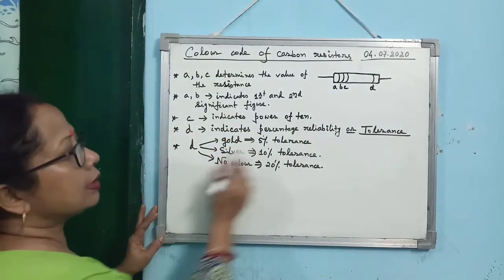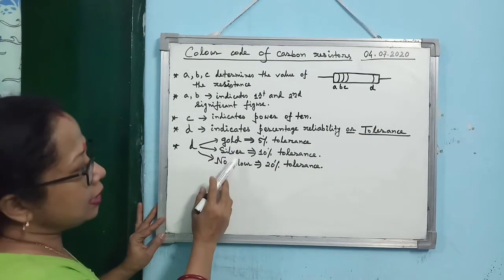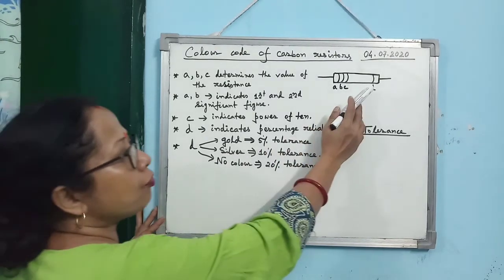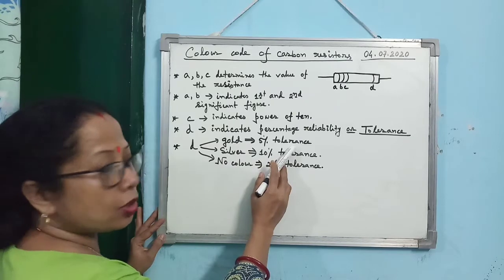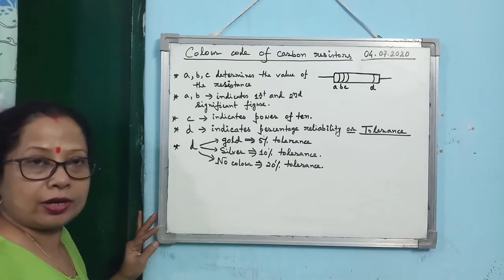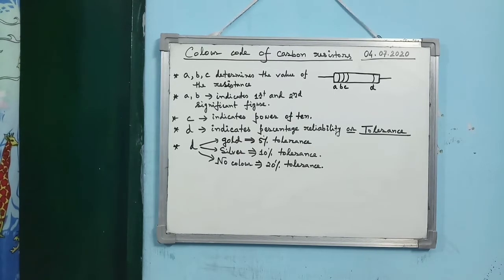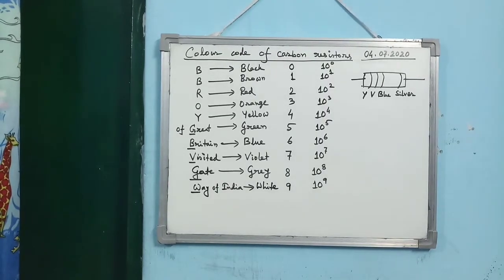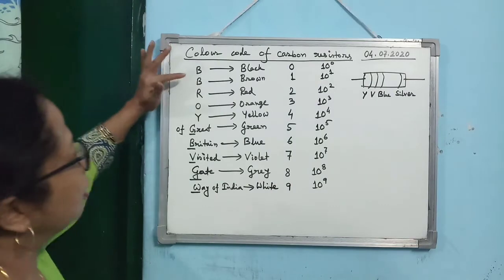The possible colors of ring D are gold, silver, or no color. Gold means 5% tolerance, silver means 10% tolerance, and no color means 20% tolerance. For rings A, B, and C, there is a nice color code to determine the resistance value.